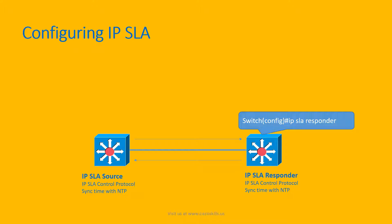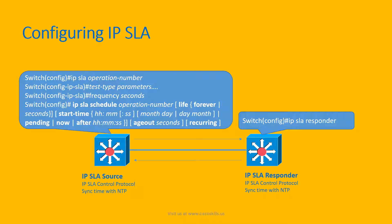On the IP SLA source, we need to perform several steps. Since we can define multiple tests, we first need to define the IP SLA operation number — each test is bound to one operation number. After that, we specify the test type for that specific operation number. Each test type will have different parameters, which we will explore further. We can also specify the frequency in seconds.